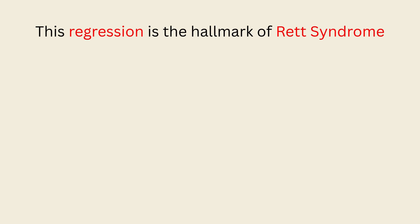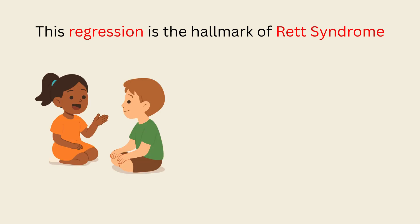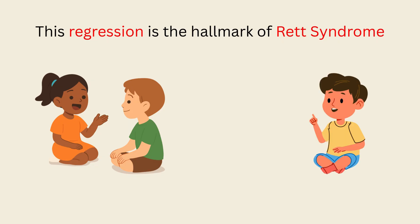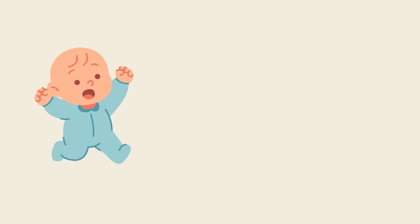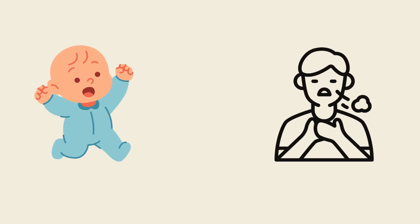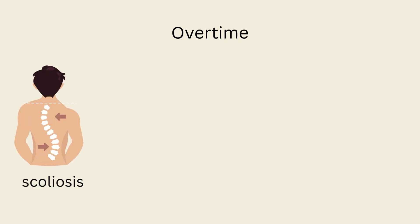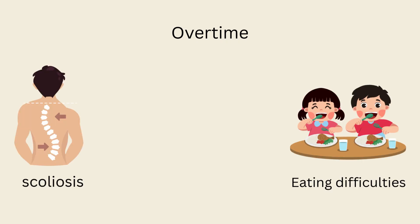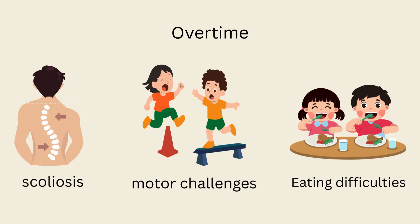This regression is the hallmark of Rett Syndrome. A child who once used words may lose speech. Hand use becomes limited, replaced by repetitive movements like wringing, tapping, or clapping. Walking can become unstable, and breathing irregularities or seizures often appear. Over time, many girls develop scoliosis, eating difficulties, and severe motor challenges.